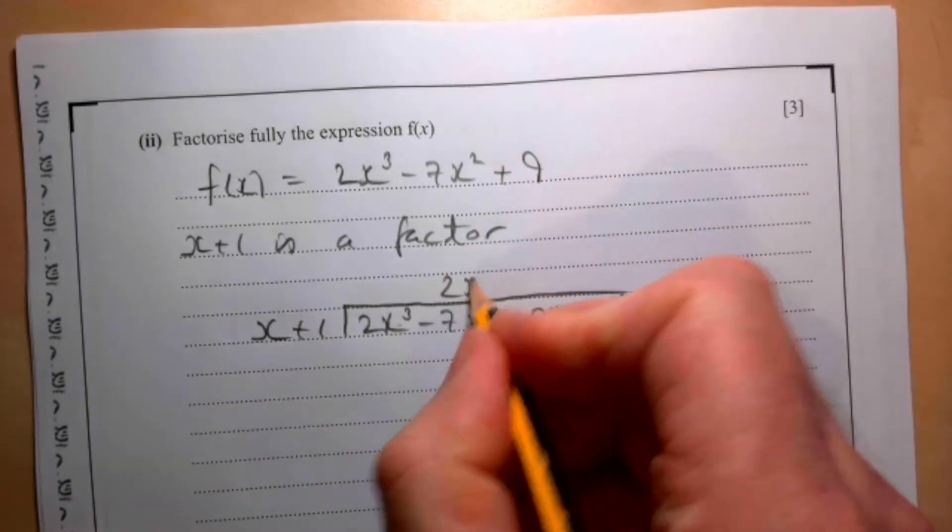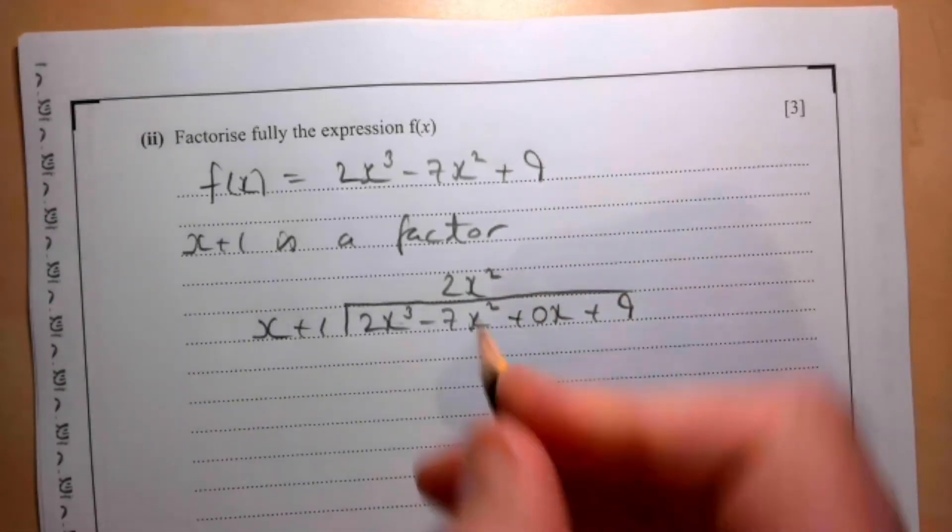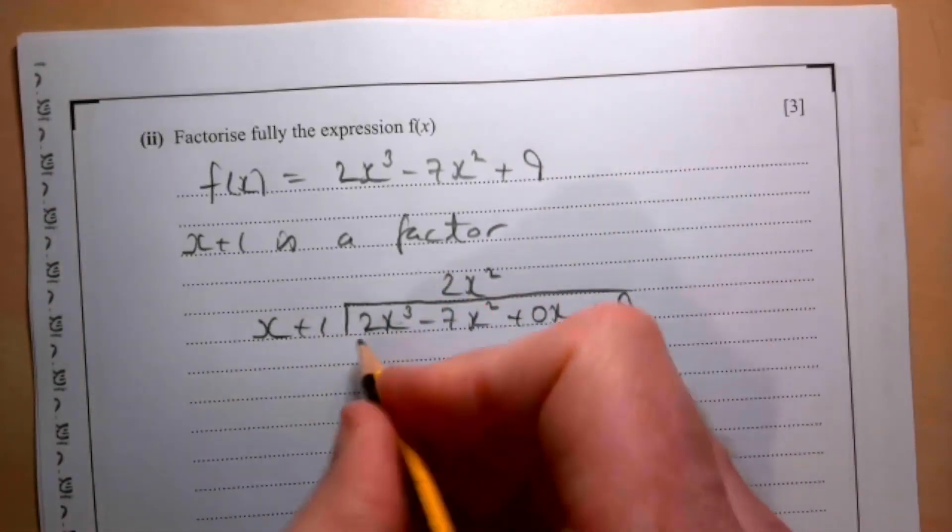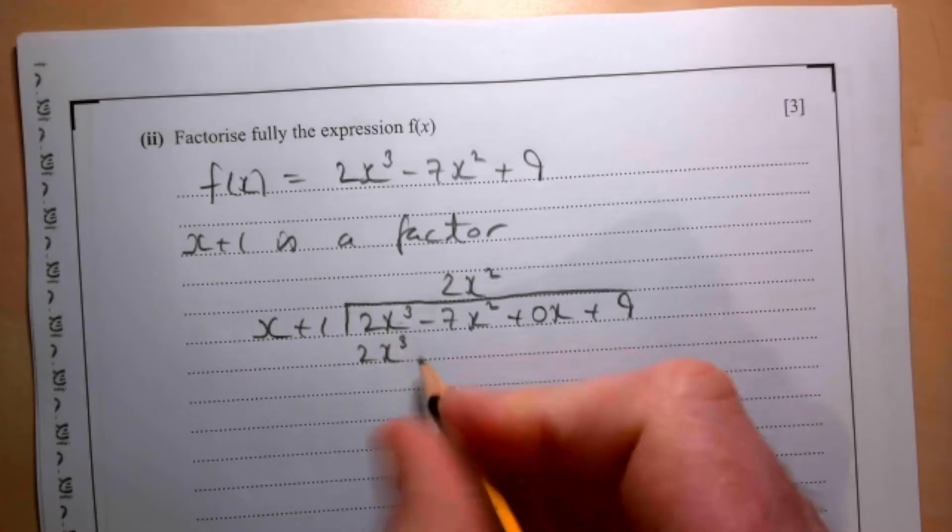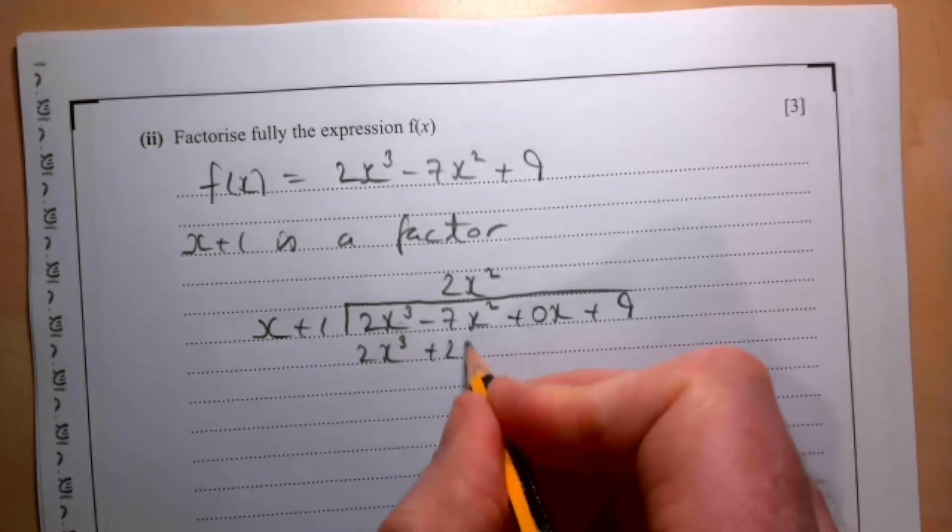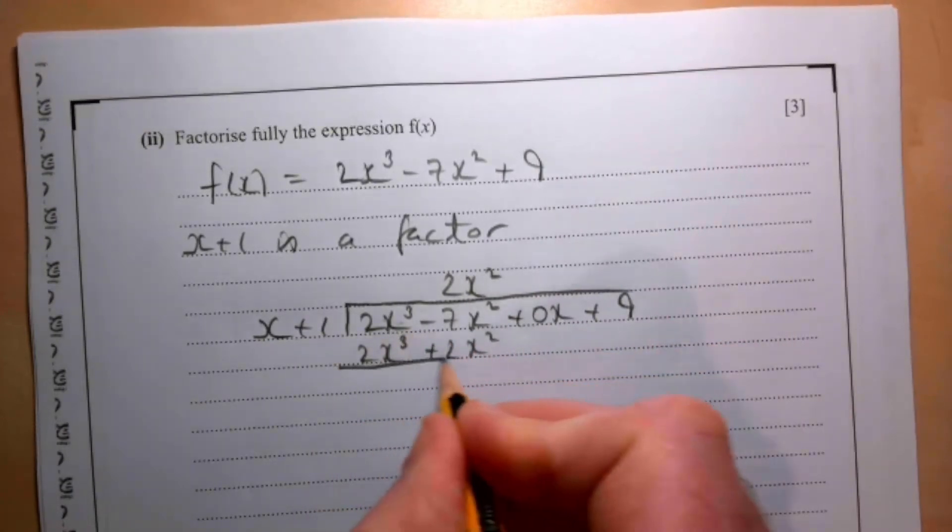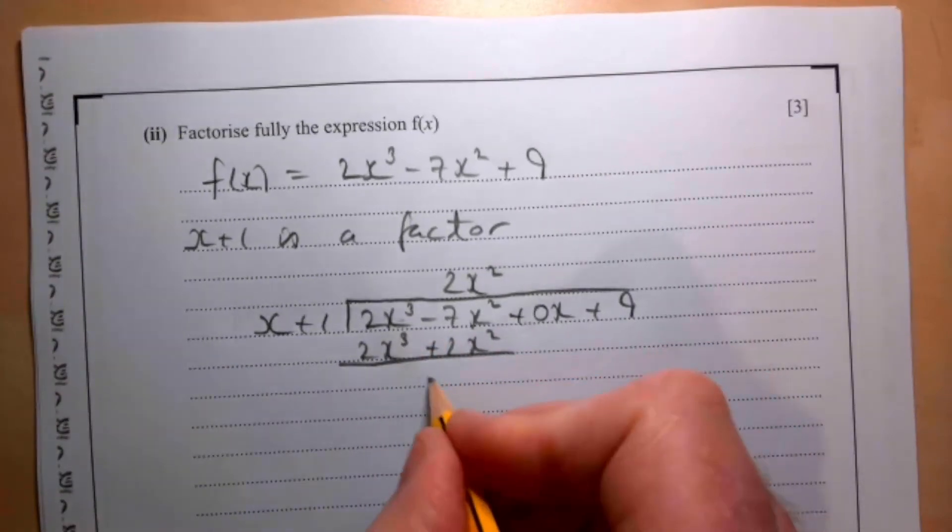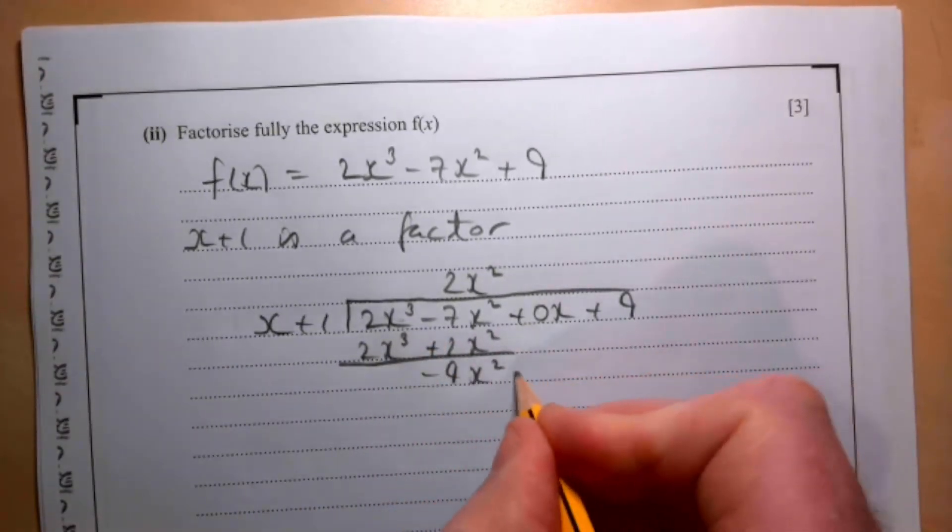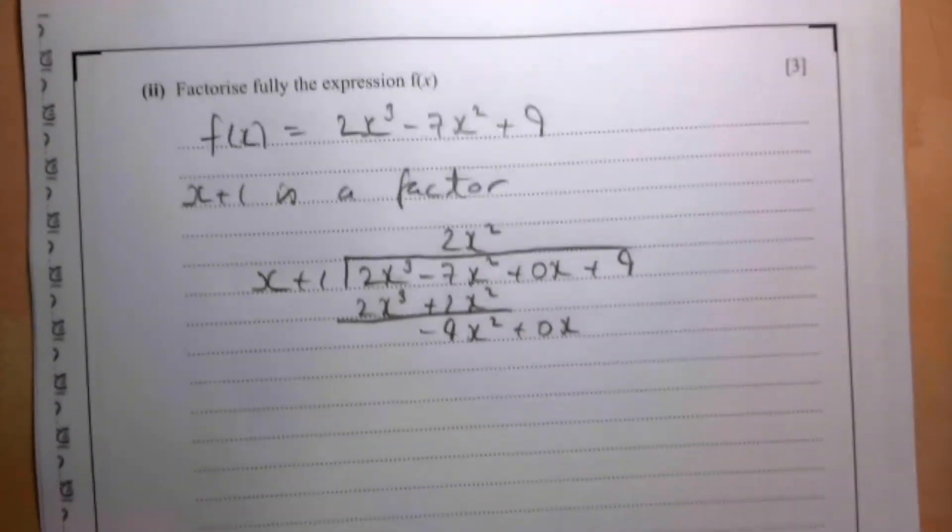x into this gives me 2x². Times this by this: 2x³ + 2x². Taking those away, I get -9x², and I bring down my 0x.